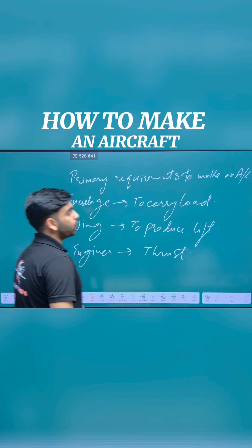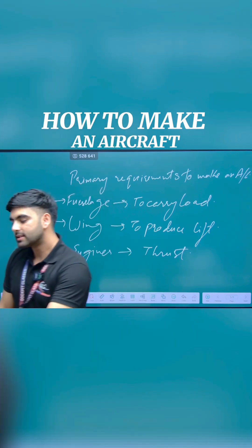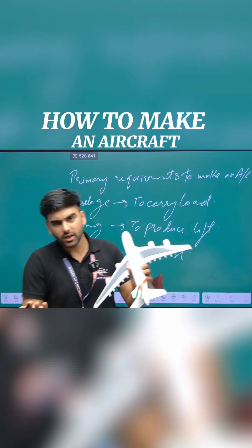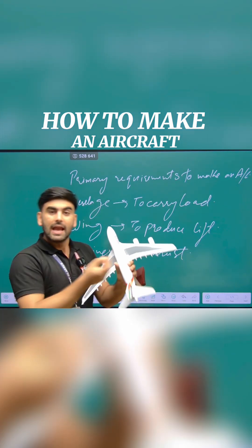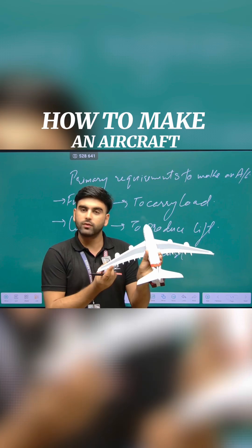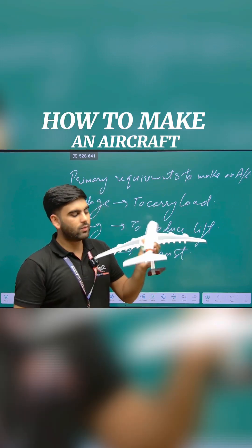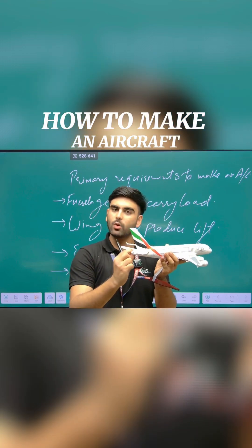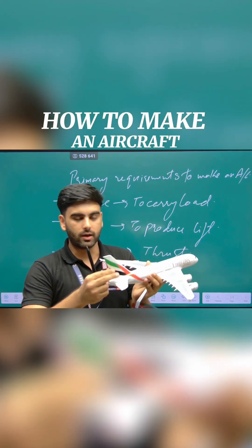The fourth and very important thing is the controls. There are three primary controls that are in an aircraft. One is your ailerons. Ailerons are always situated at the end of the wing over here. And then we have elevators, which are situated at this location. And the third one is rudder.